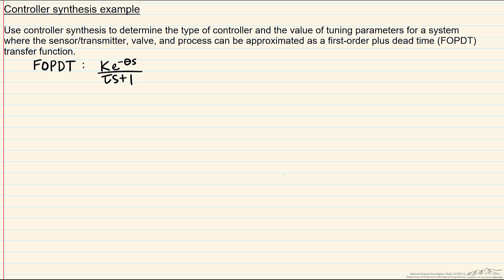In this screencast we will take a look at using controller synthesis for processes where the controller that is developed is physically unrealizable. We are going to apply the methodology of controller synthesis to a system where G represents a first-order plus dead time transfer function. Recall that for a first-order plus dead time transfer function, the transfer function is k·e^(-θs) divided by τs+1.